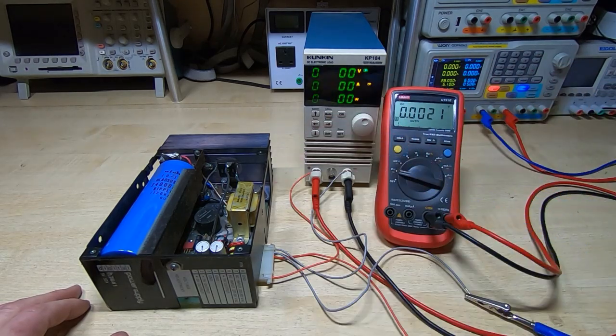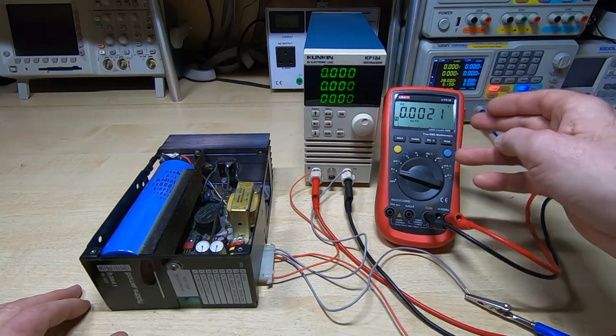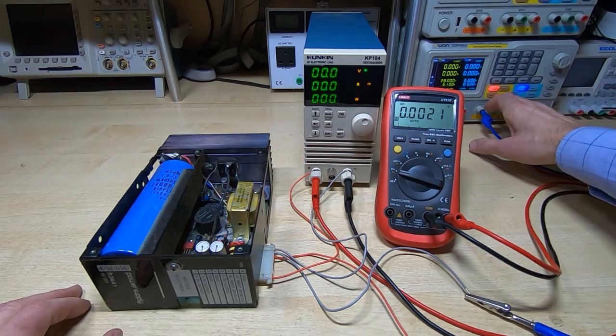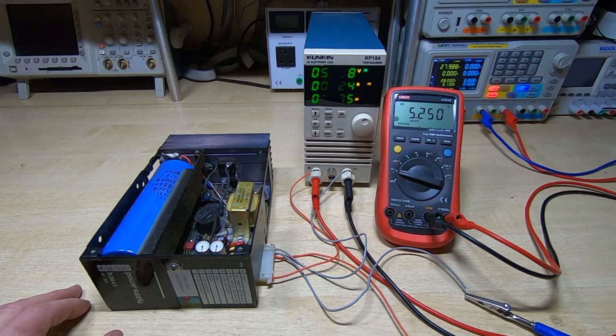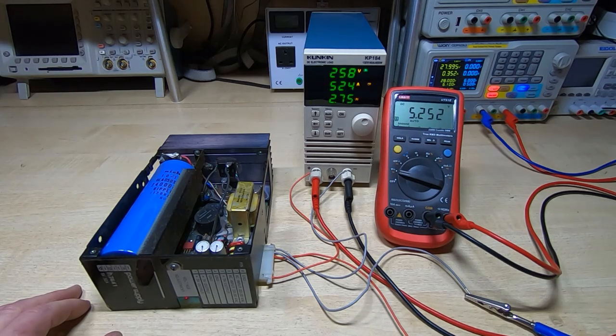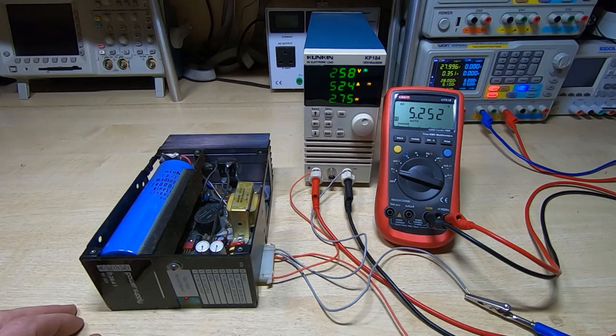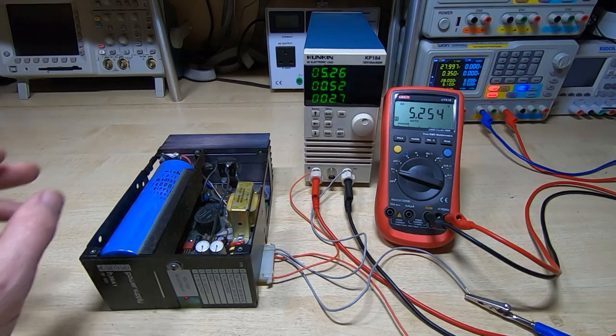I'm going to turn the load on. Zero volts, of course, it's not on yet. We'll turn the power on and we're getting 5.2 volts. Might sound a bit high, but at 10 ohms only drawing half an amp, so it's very lightly loaded.